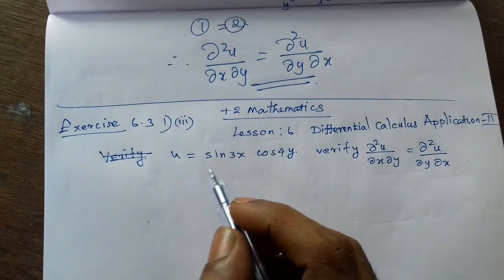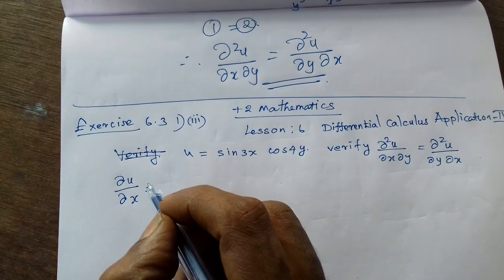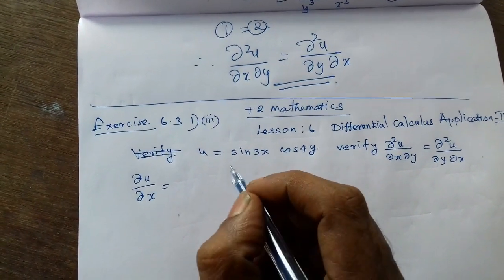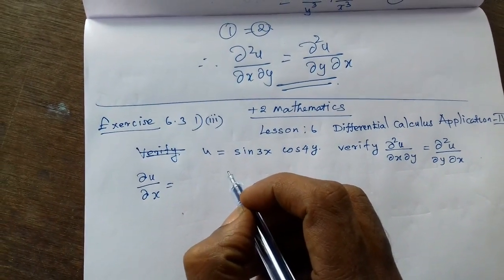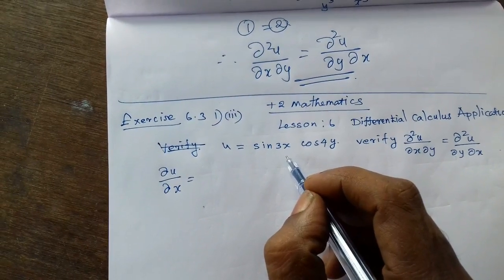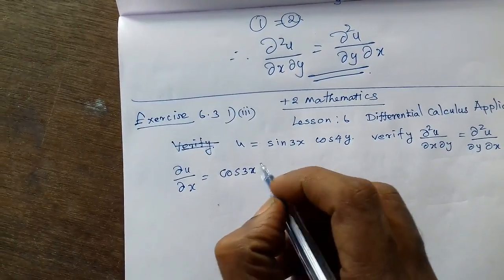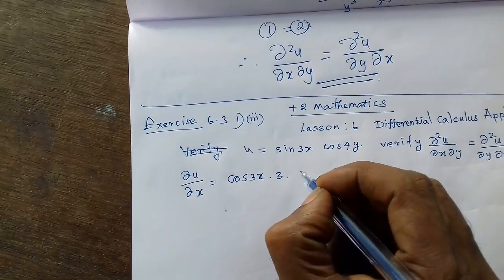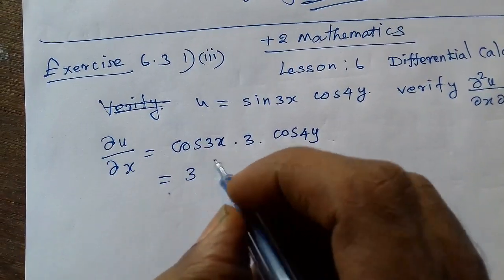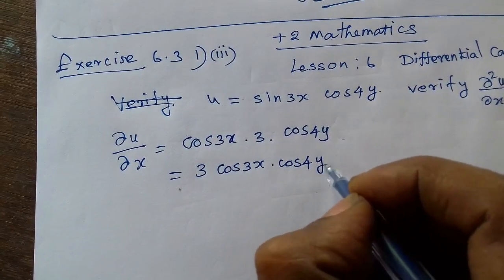First, find ∂u/∂x. In partial differentiation with respect to x, treat cos4y as a constant. sin3x differentiates to cos3x, multiplied by 3. cos4y comes out as a constant. Simplify: ∂u/∂x = 3cos3x · cos4y.